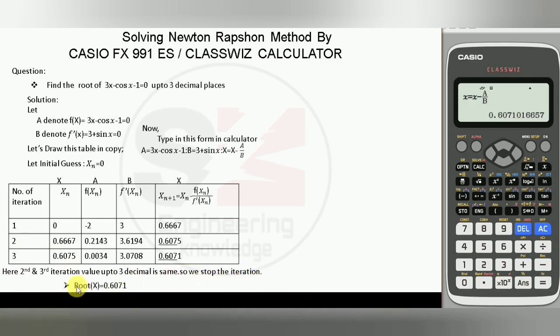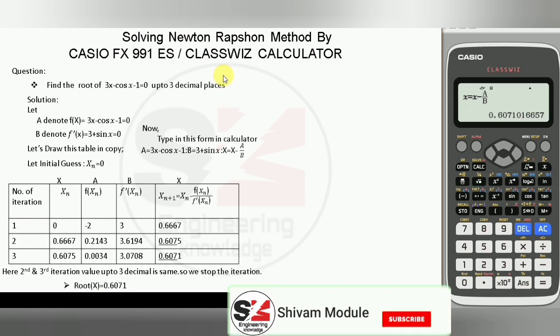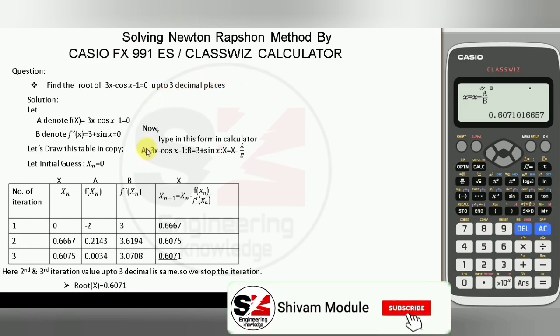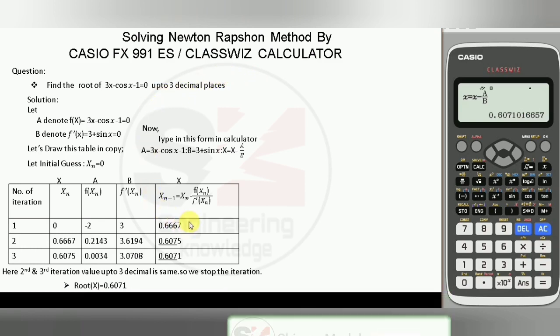At last, therefore the root will be 0.6071. In this way you can solve the Newton-Raphson method in a simple way by following these steps. Within a minute we can get the answer. If you like this video, please like, share and subscribe to my channel. Thank you.